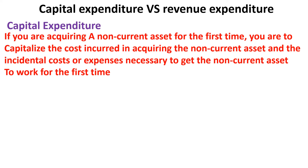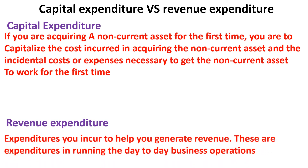When it comes to revenue expenditure, it is more about the costs that are used up in the process of making business — these are what we call expenses. Things like salaries and wages, rent, and costs incurred to help you generate revenue in the normal day-to-day running of your business — that is what we call revenue expenditure.